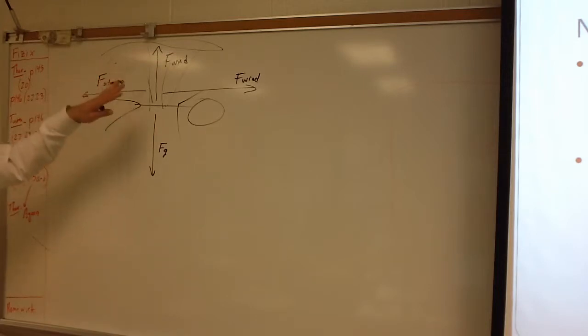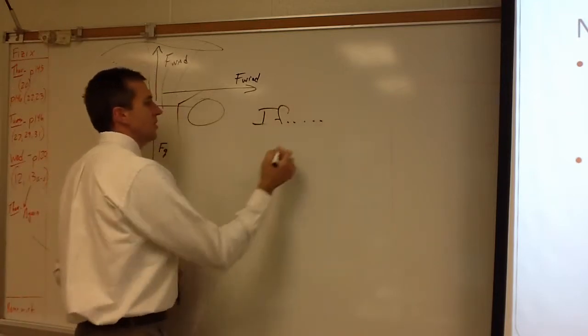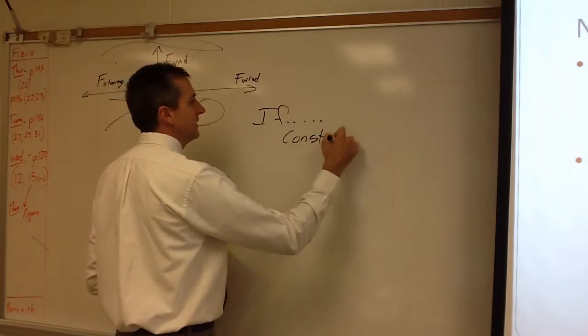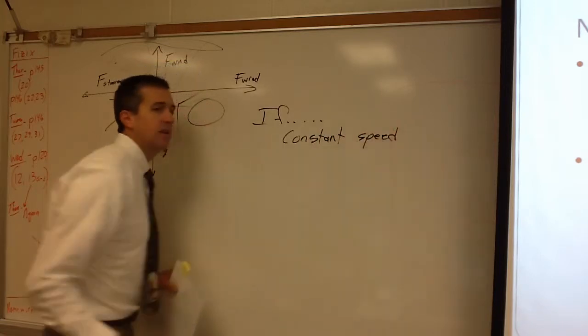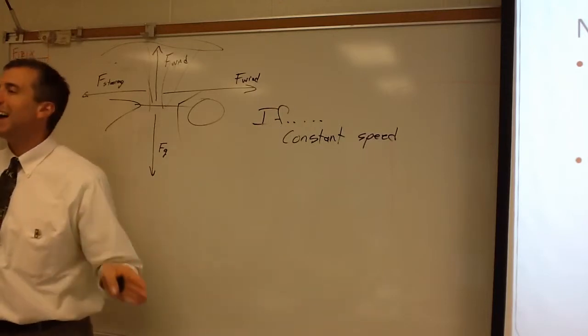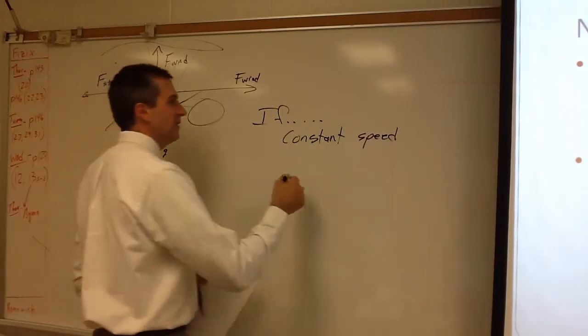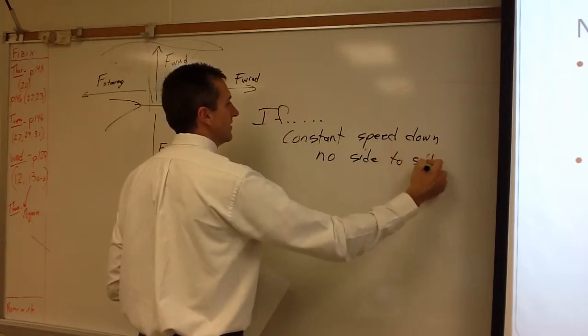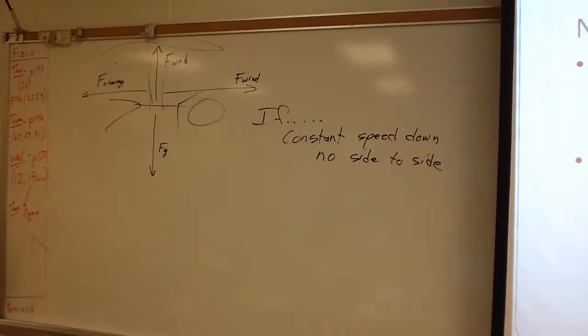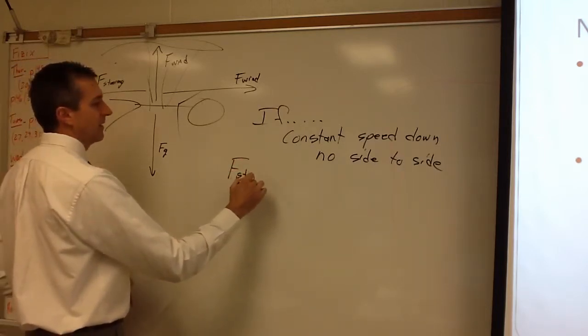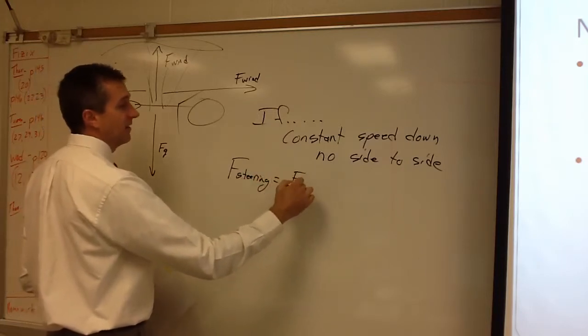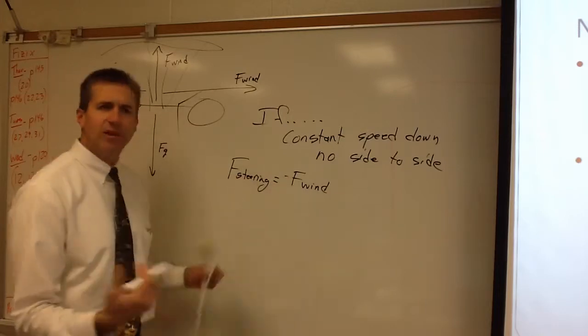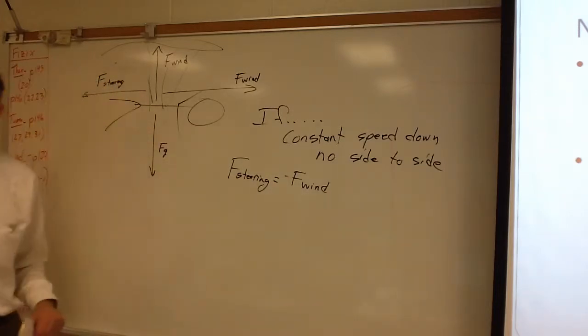And so, you end up having a picture with four different forces acting in four different directions. Now, if you are moving at a constant speed as you fall, so you're moving at a constant speed downward, and you have no side-to-side motion, constant speed down, no side-to-side. In that case, what do you know about these forces? Well, you know that the steering force is equal and opposite the wind resistance. So, one is a positive, one is a negative. They cancel each other out in terms of vector language. They just cancel.